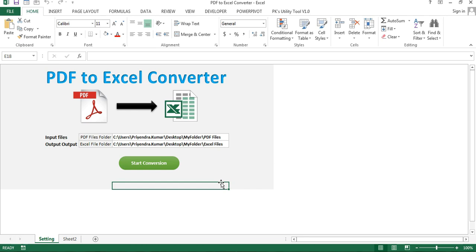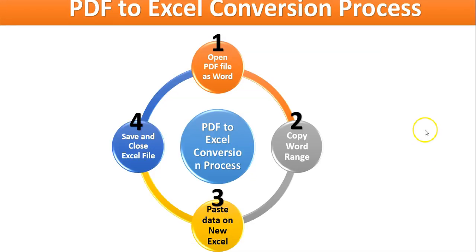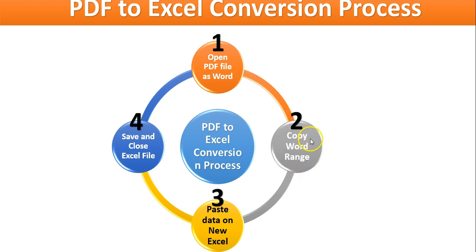Now I'll show you the process of how it is converting. This is the process of PDF to Excel conversion. First, what this macro is doing is opening a PDF file as a Word file. Then it is copying the Word range — meaning all the data available on that Word file, it simply copies that data.